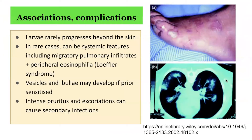Unlike human hookworm disease and strongyloidiasis, cutaneous larva migrans rarely progresses beyond the skin. In rare instances, there may be systemic manifestations including migratory pulmonary infiltrates in the lung and peripheral eosinophilia in the blood, which is known as Löffler's syndrome. However, this is quite rarely seen. The most common systemic finding is a moderate peripheral blood eosinophilia. Due to intense pruritus and scratching, superimposed bacterial infections may complicate the clinical picture. The images on the right-hand side demonstrate the pulmonary infiltrates in the lung as well as cutaneous larva migrans features on the foot, comprising Löffler's syndrome.